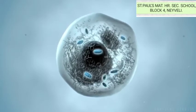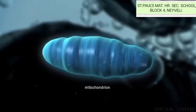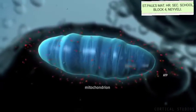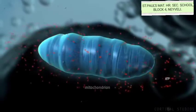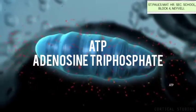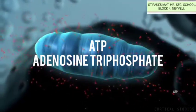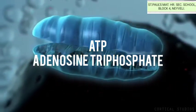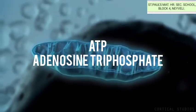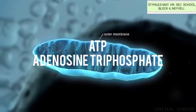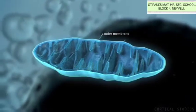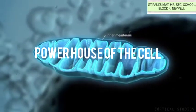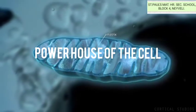Mitochondria are filamentous or granular cytoplasmic organelles present in the cells. Mitochondria are organelles within eukaryotic cells that produce adenosine triphosphate, i.e. ATP, which forms the energy currency of the cell. For this reason, the mitochondria is referred to as the powerhouse of the cell.